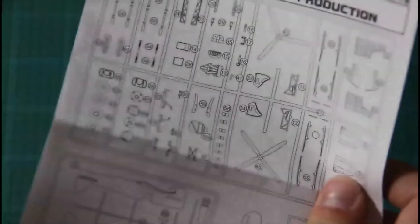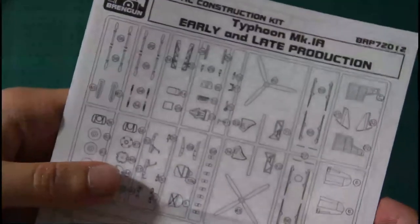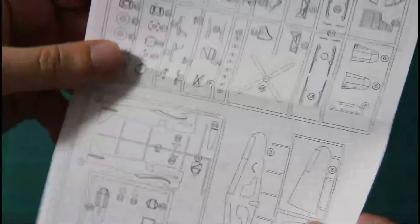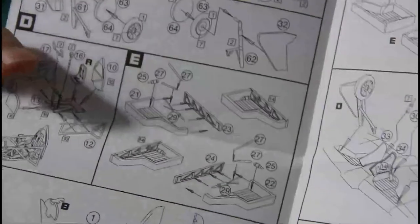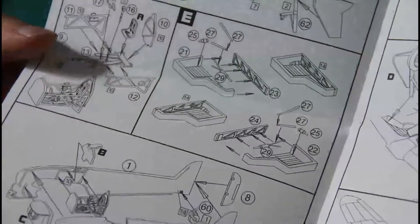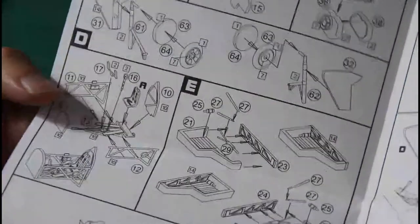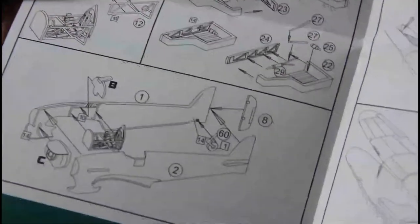We will see further because now we have assembly manual which is quite simple. It is a four page folded into halves. Here we have a parts map. Here we have assembly guide, the cockpit which is quite simple as you can see, even though the cockpit would be pretty much detailed for the 1/72 scale as you can see.